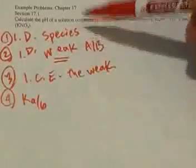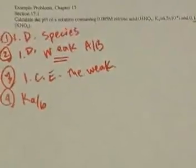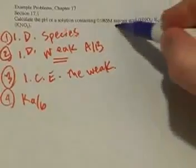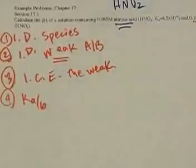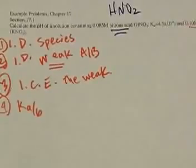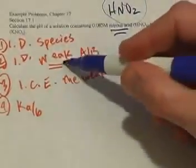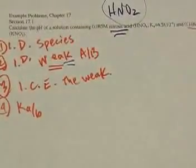The first problem says: calculate the pH of a solution containing 0.085 M nitrous acid (with a given Ka) and 0.1 M potassium nitrite. Nitrous acid is HNO2 — remember, HNO3 is the strong acid, but HNO2 is weak. So we identify HNO2 as a weak species and mark it, since that's what we'll focus on.